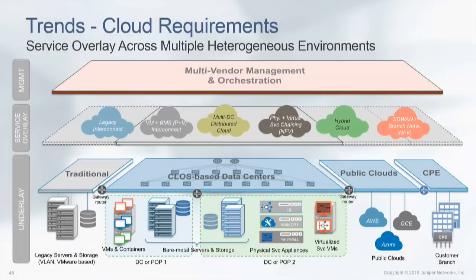There will be public clouds — Amazon, Google, or Azure — as well as service providers building their own public clouds. There is the enterprise branch as well. All of these need to interconnect with each other. The requirements we see from customers include legacy interconnect: how do you connect your traditional data center with your modern next-generation data centers?